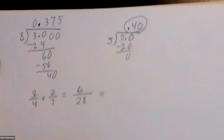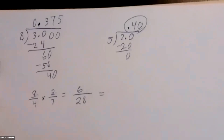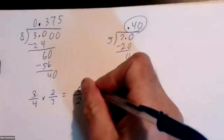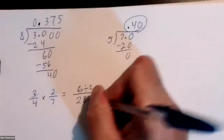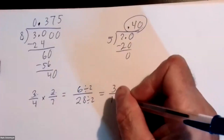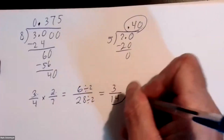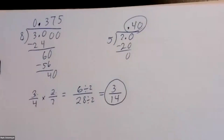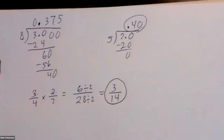We have to simplify this. If you can reduce it, always try to reduce it. We divide. This can be reduced by two, down to three over fourteen. That would be your answer.